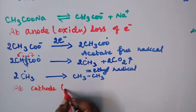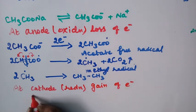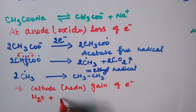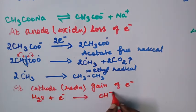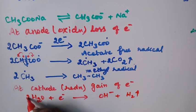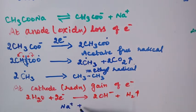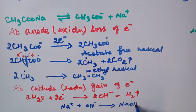At the cathode, reduction takes place — reduction means gain of electron. The water molecule gains electrons and forms OH⁻ and hydrogen gas. Taking two water molecules and two electrons: 2H2O + 2e⁻ → 2OH⁻ + H2. The OH⁻ ions then combine with Na⁺ ions to form NaOH, which remains in solution.